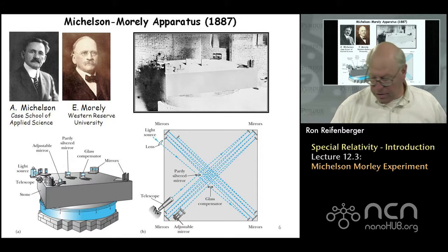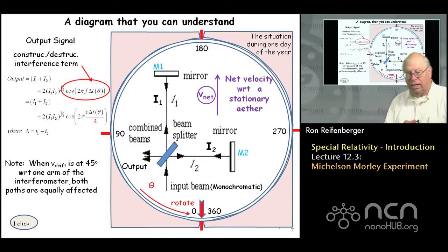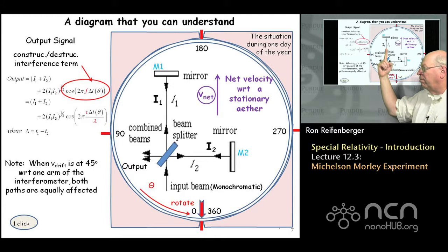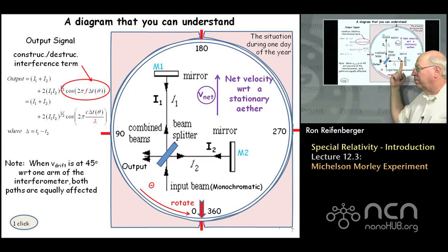Here's a simpler schematic diagram. This is the input light beam, which we assume to be monochromatic — it has one wavelength. There's a beam splitter, which is a partially silvered mirror. The beam splitter splits the light: some of it goes one way, some of it goes the other way. There are two mirrors: mirror M1 and mirror M2.